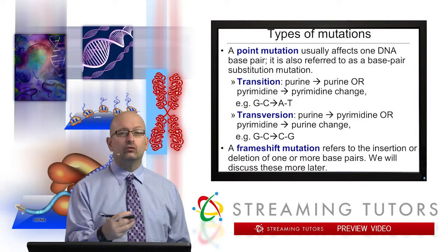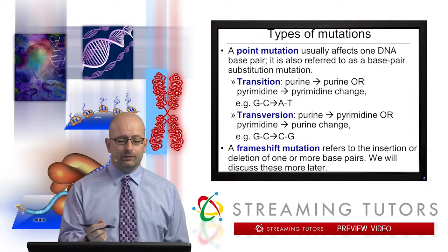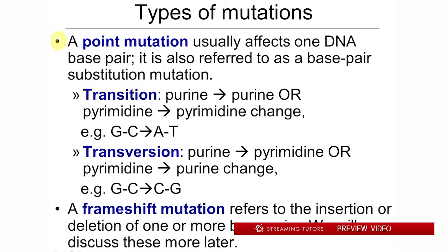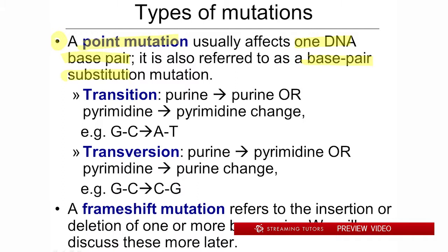What are the different types of mutations with respect to what's actually changing at the DNA level? A very important type you're definitely expected to know is a point mutation. The idea of a 'point' is that it affects just one particular point on the DNA — in the strictest definition, it usually only affects one DNA base pair out of the millions and millions that may exist. These changes can also be referred to as base pair substitution mutations, because if one base is changing to another, you are substituting one base for another.